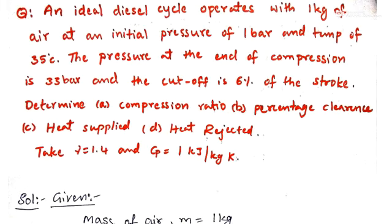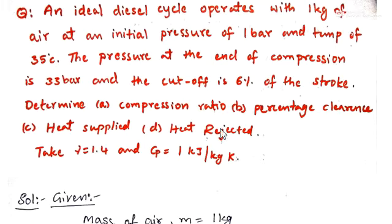Now we are seeing a problem on the diesel cycle. An ideal diesel cycle operates with 1 kg of air at an initial pressure of 1 bar and temperature of 35 degrees centigrade. The pressure at the end of compression is 33 bar and the cutoff is 6% of the stroke. Determine: first, compression ratio; second, percentage clearance; third, heat supplied; fourth, heat rejected. Take gamma = 1.4 and Cp = 1 kJ per kg Kelvin.